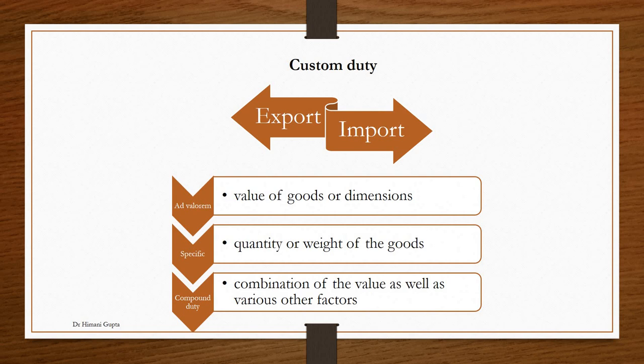The second type is specific rate, which is charged on quantity or weight of goods — the value of goods has no relation to the tax amount. For example, if you are charged 100 rupees per ton, whether you import goods worth 10 rupees or 1,000 rupees per ton, the tax remains 100 rupees. The value of goods has no link to the tax amount.